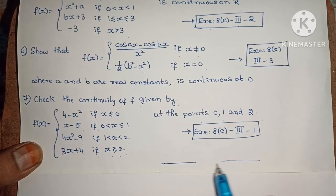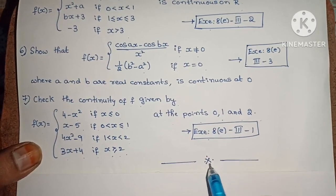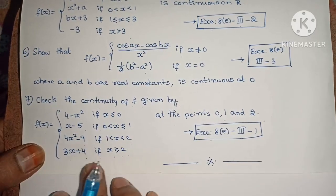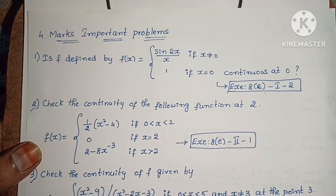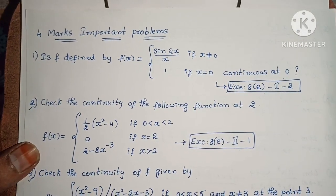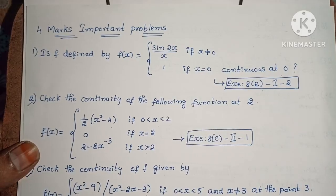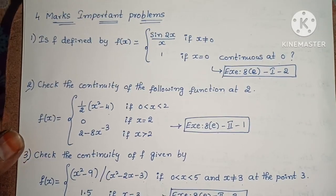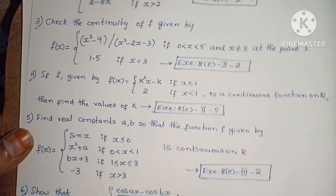Then Limits and Continuity chapter 1 important problems are complete. Here are 7 problems — this is 4 marks. So 2 marks problems and 4 marks problems.